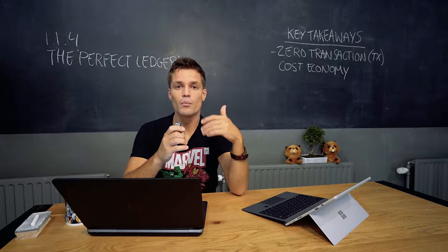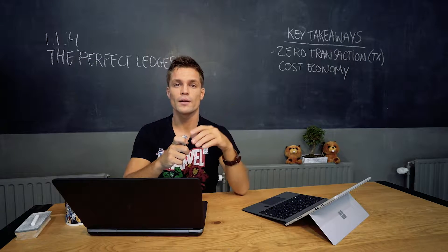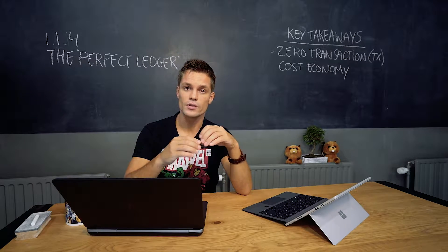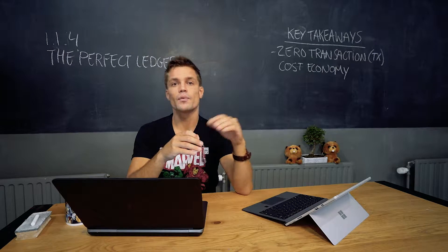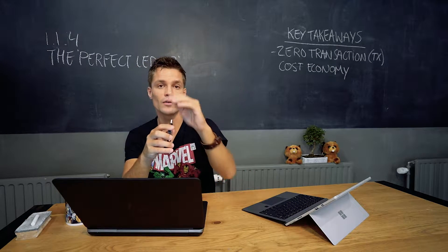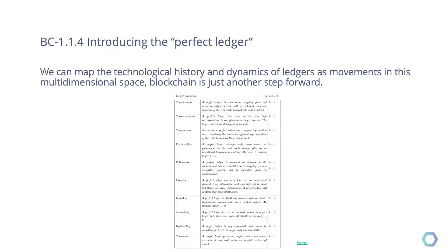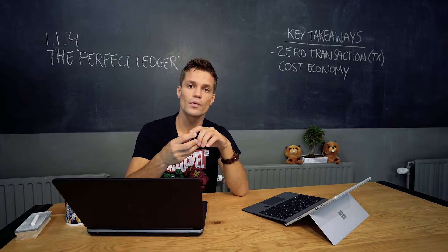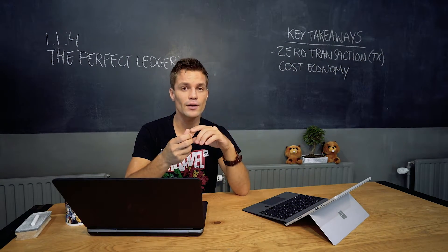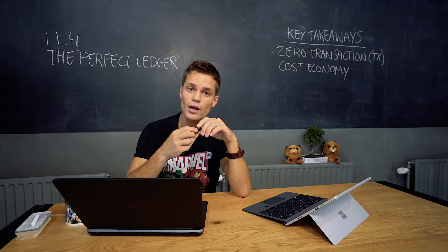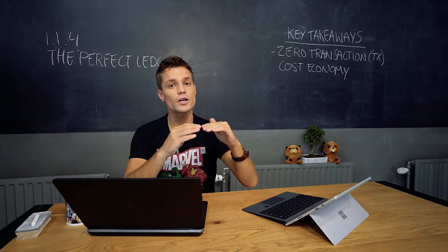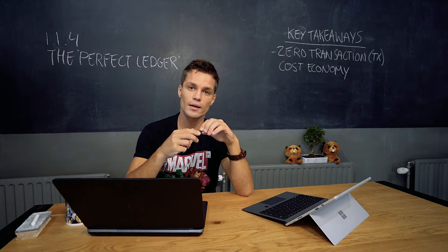While we keep on moving and improving towards that final goal — zero transactional costs — we keep letting society grow with it. In the next slide, you can see an overview of the perfect ledger with its properties; I suggest you read that on your own. I think you now have a decent idea of what we strive towards — a perfect ledger. Keep in mind that a blockchain is not a perfect ledger, but it's just another step towards that perfection.